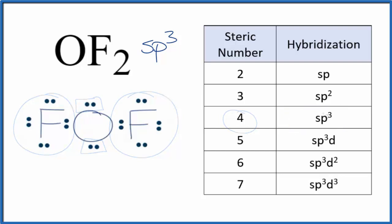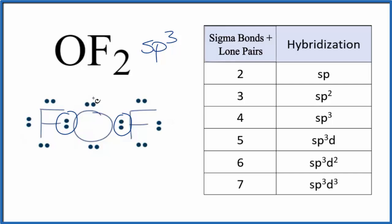Here's the other. We can also count the number of sigma bonds and lone pairs. So a sigma bond, that's a single bond. So we have a sigma bond right here and here, and then we have a lone pair here and here. One, two, three, four, sp3 hybridized.